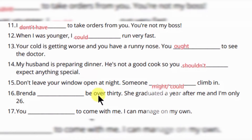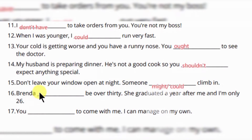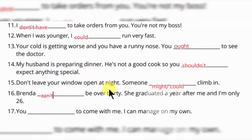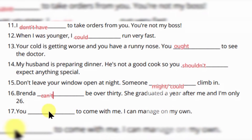Brenda ___ be over 30. She graduated a year after me and I'm only 26. So Brenda can't. You ___ to come with me — I can manage on my own. You don't have to come with me.